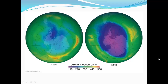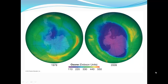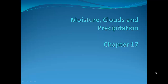Ozone, measured in Dobson units, was thicker in 1979 than in 2009 — it is now much thinner. This is another atmospheric change occurring over time. End of chapter.